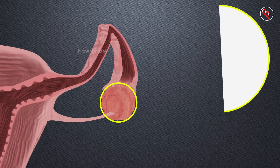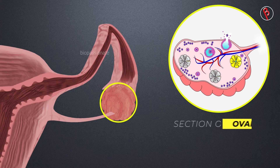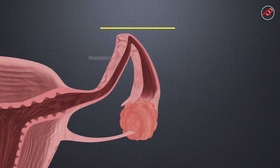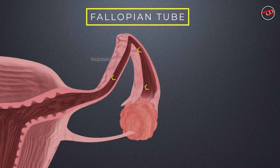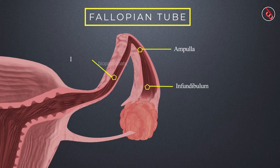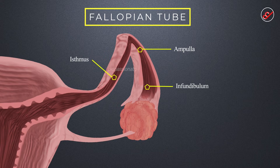Each ovary is composed of developing follicles, stroma, and blood vessels. There are two fallopian tubes, which are 10 to 12 cm in length, lying on either side of the uterus. Fallopian tubes show four important regions: they are the infundibulum, ampulla, isthmus, and the uterine part.